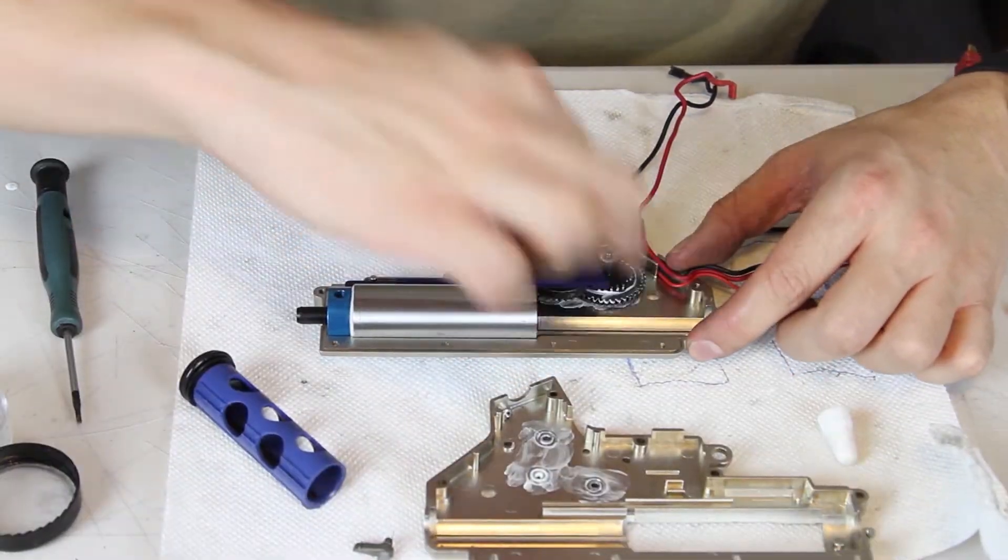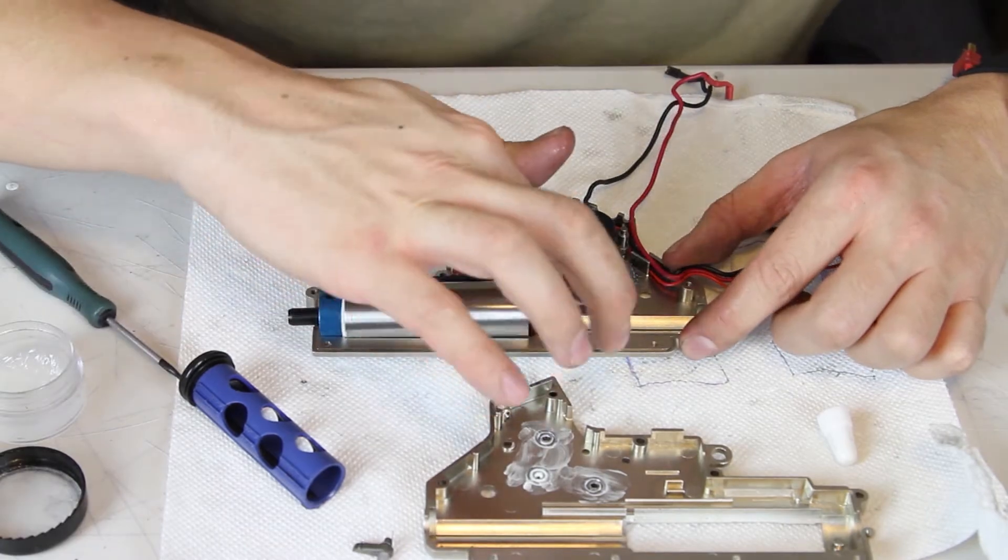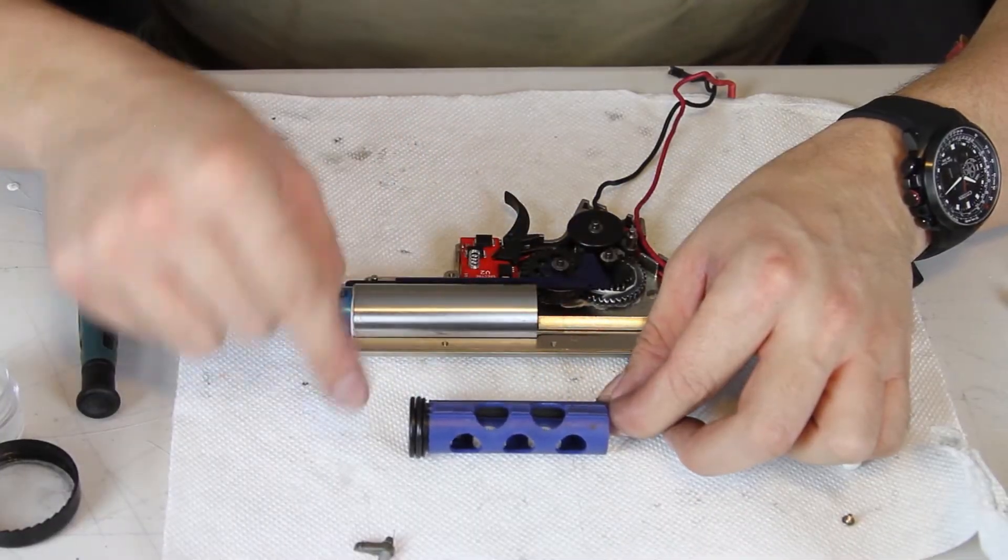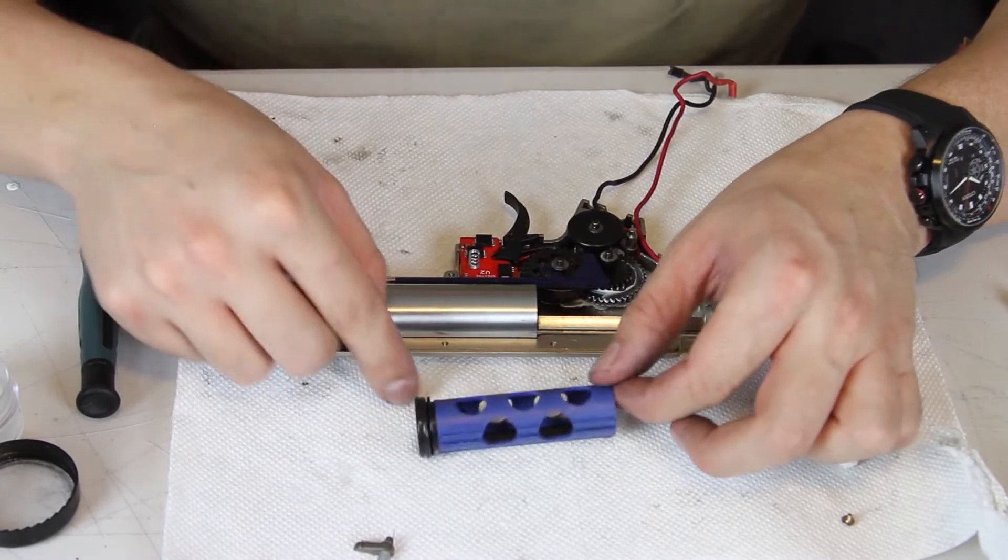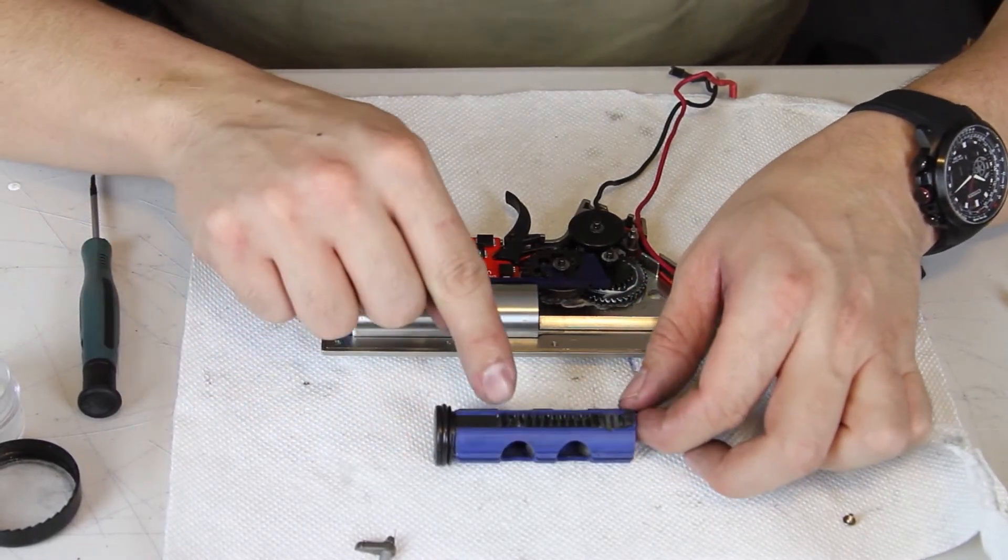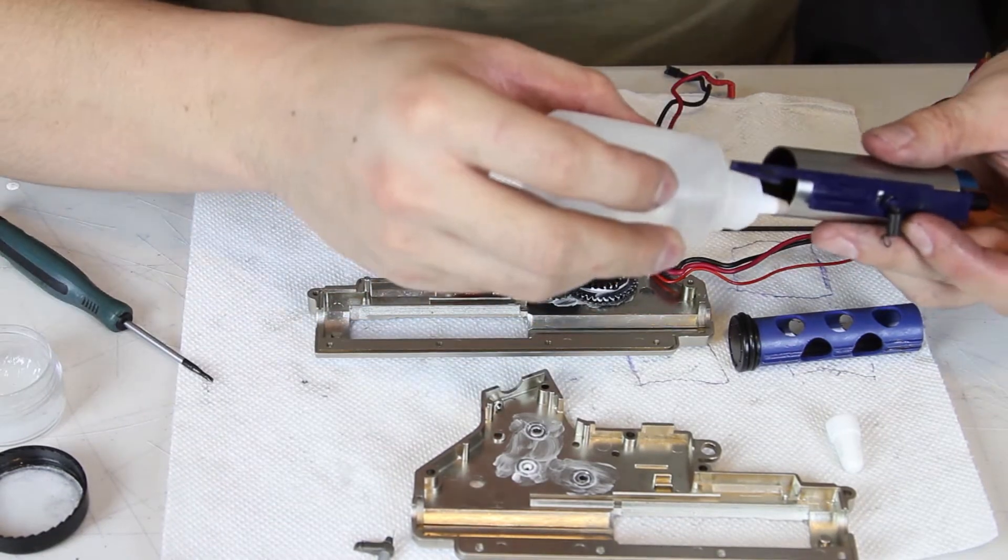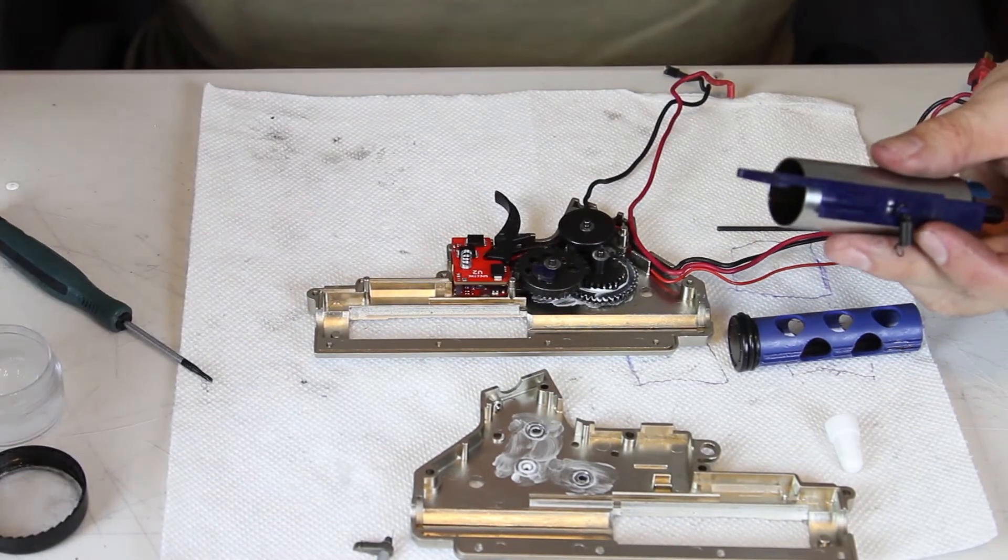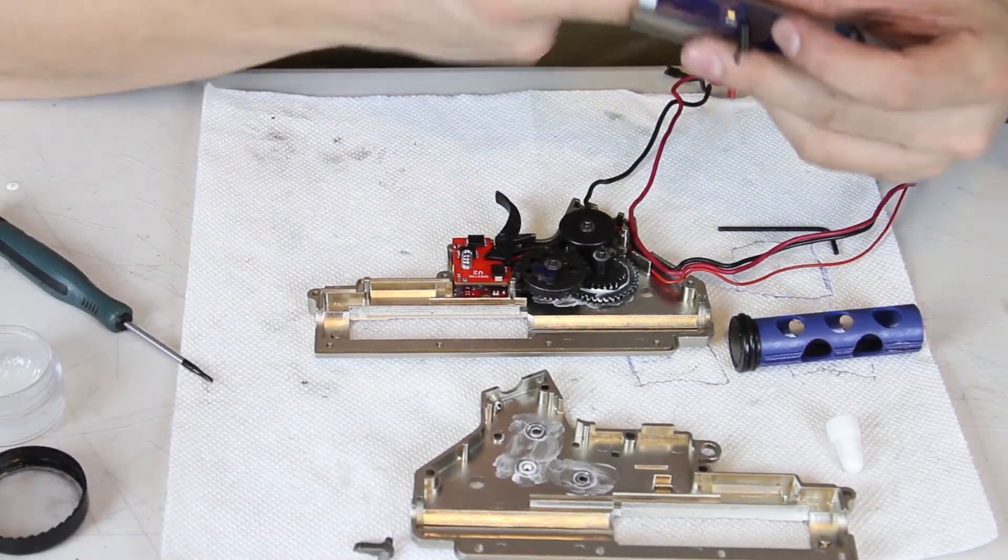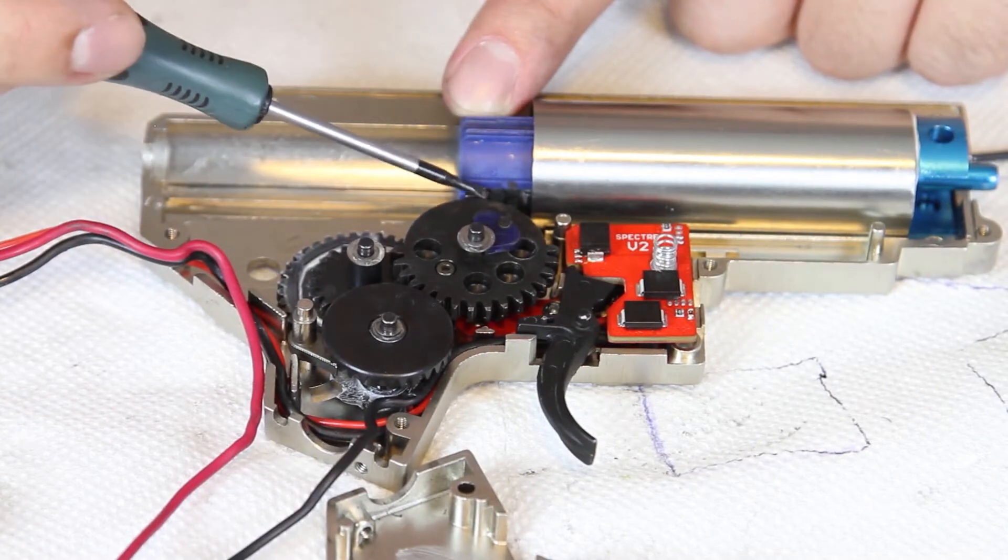Once everything is well aligned, take the works out and apply a small amount of gear grease to the grooves on the side of the piston, to the piston teeth, and to the small grooves on the inside of the gearbox. You should also take some lightweight 50 CPS silicone oil and put two or three drops inside the cylinder and use your finger to coat the inside.